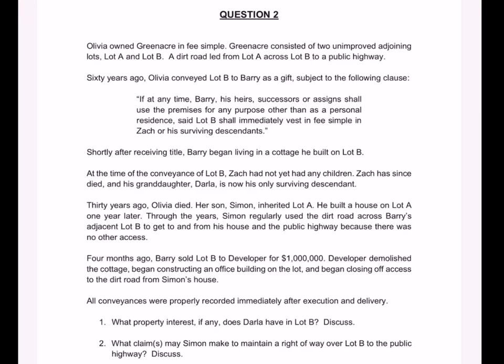Let's take a close look at question two from the July 2024 California Bar Exam. The first thing I see is that it has two calls. Call one: what property interest, if any, does Darla have in Lot B? That's a pure property call. Call two: what claims may Simon make to maintain a right-of-way over Lot B to the new public highway? That is asking about an easement. So I think this is a pure property hypothetical.